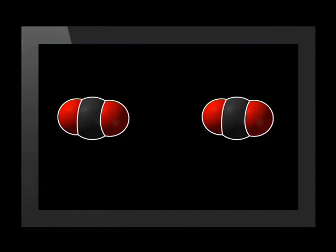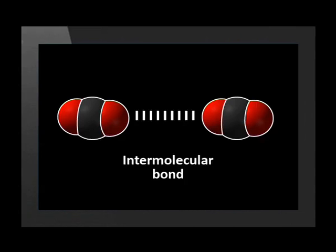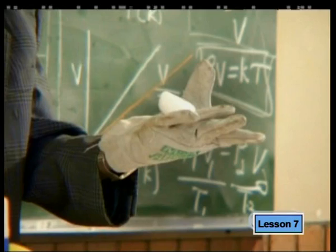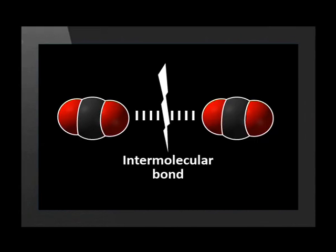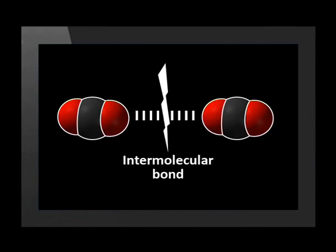But what about non-polar molecules? Carbon dioxide is a non-polar molecule, and so it has very weak intermolecular bonds which break very easily. We call solid carbon dioxide dry ice. To change from solid to gas, the intermolecular bonds must be broken. For carbon dioxide, this happens even at the cold temperature of minus 80 degrees Celsius. That's how easy it is to break these weak bonds, all because carbon dioxide is a non-polar molecule.